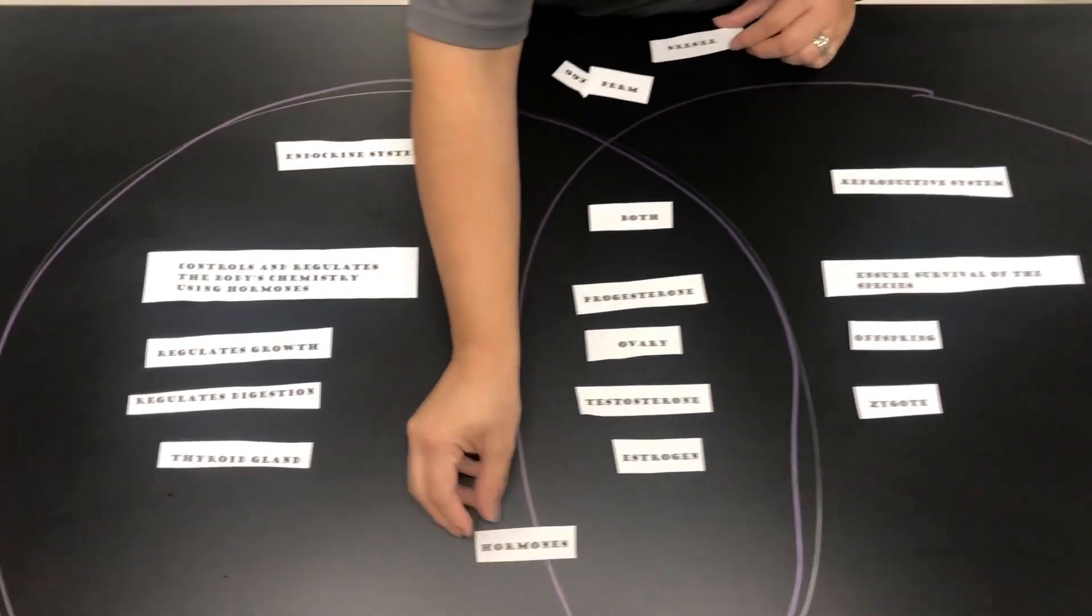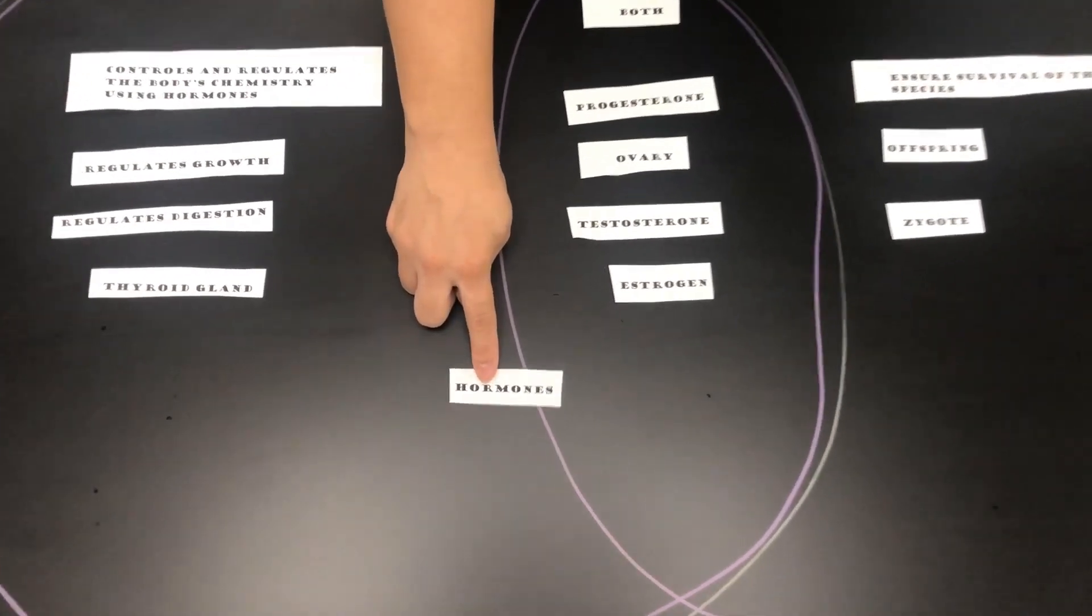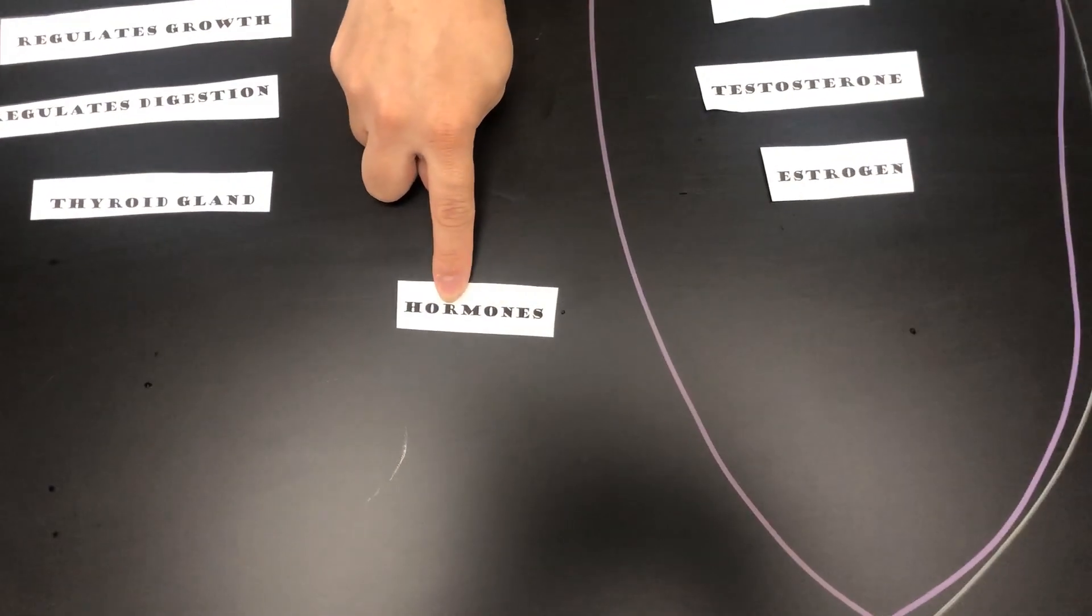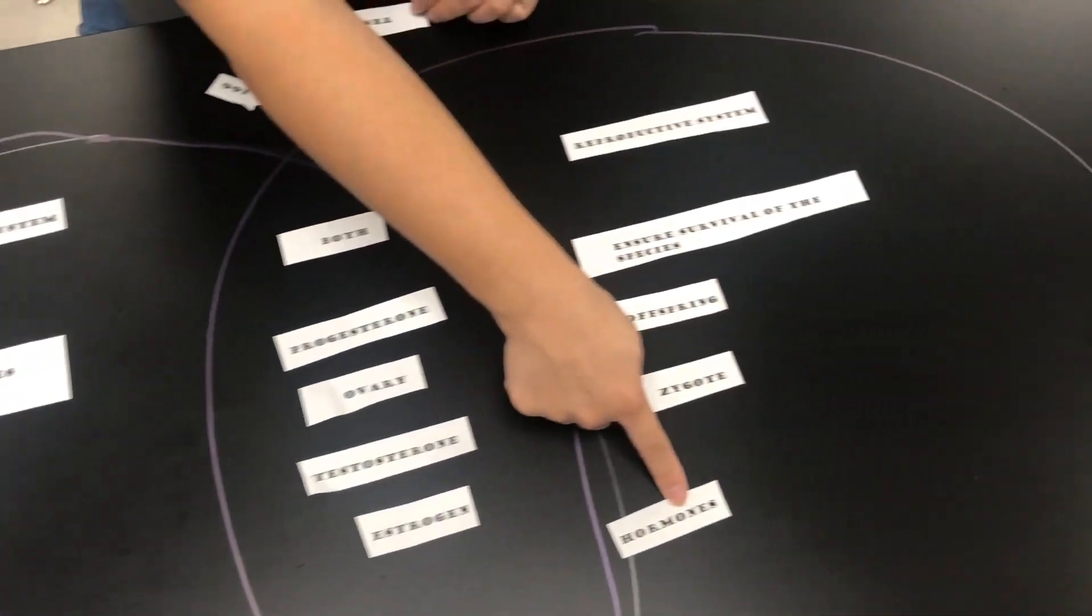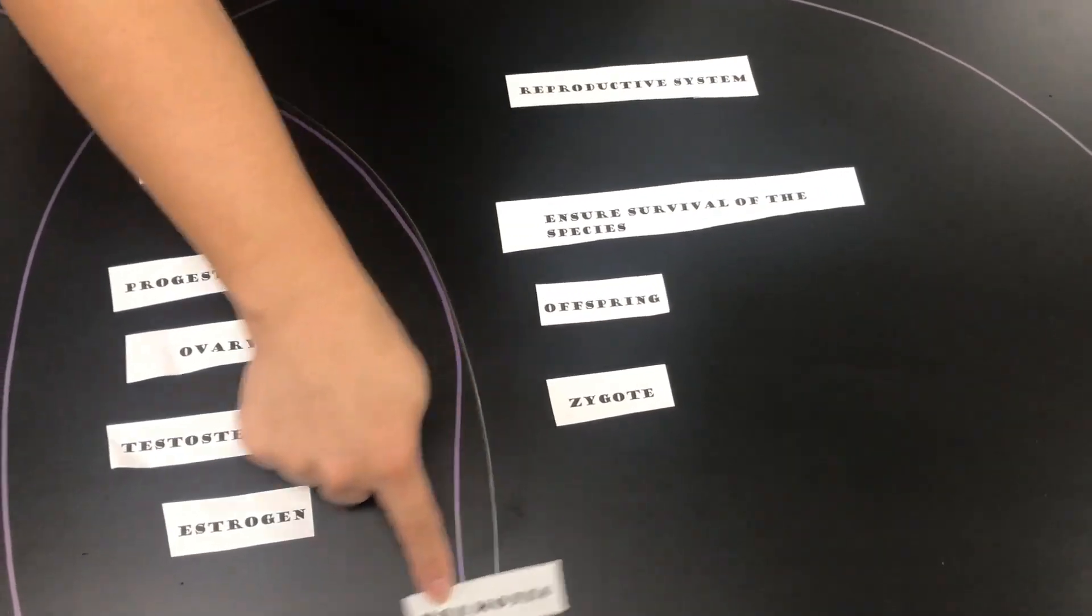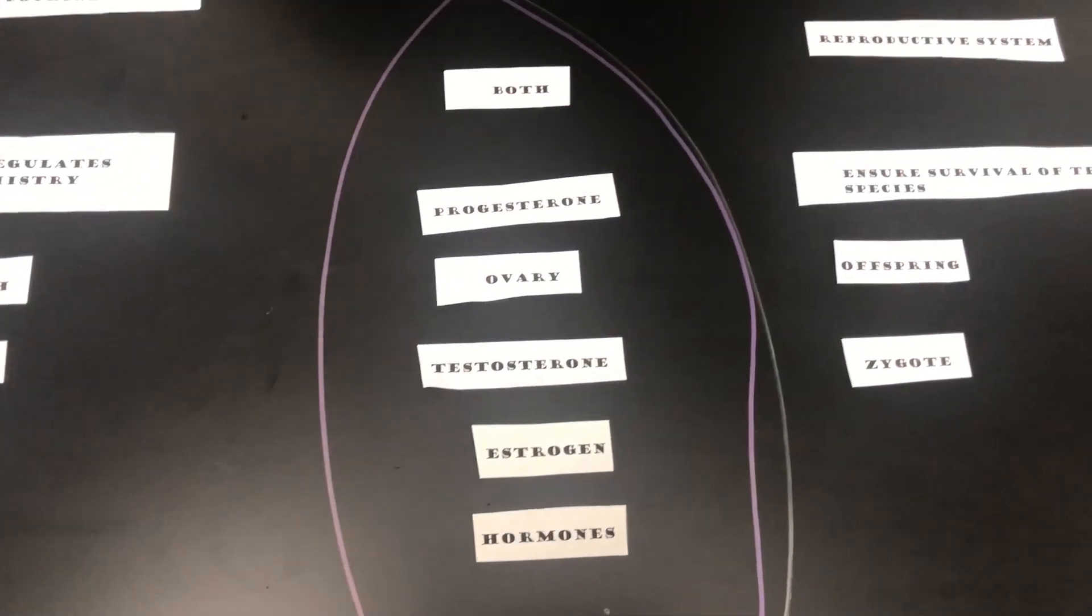The word hormones. Hormones - we definitely have in the endocrine system, but we do have hormones of the reproductive system. So we can put hormones in the middle for both.